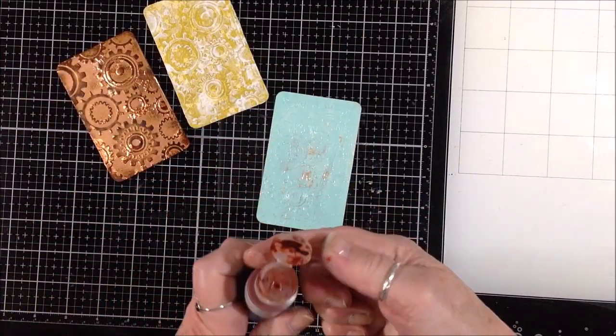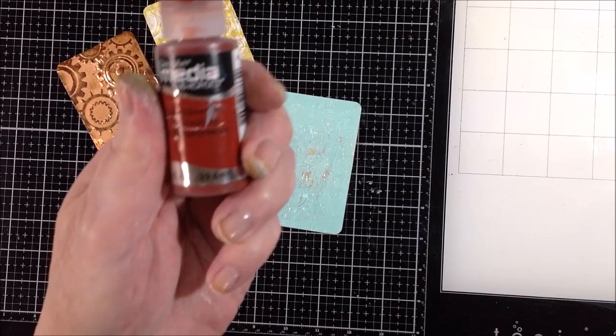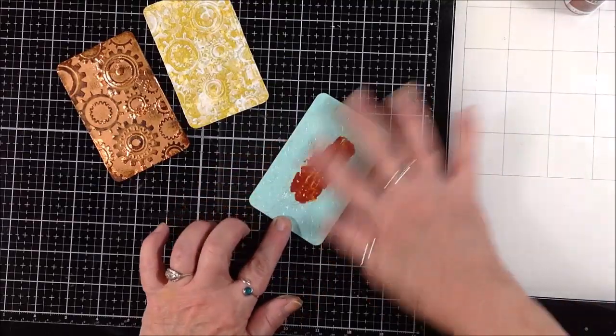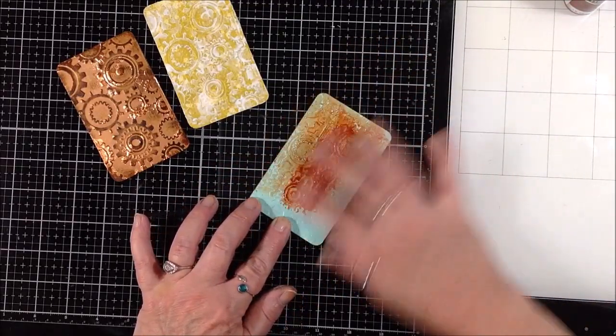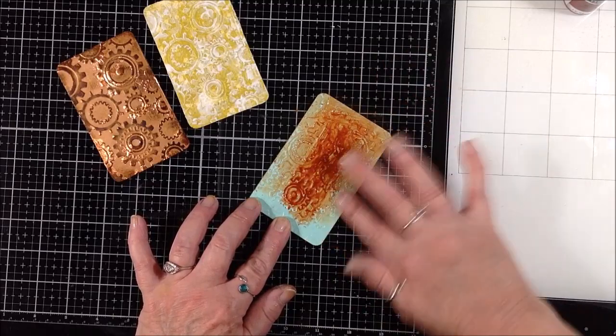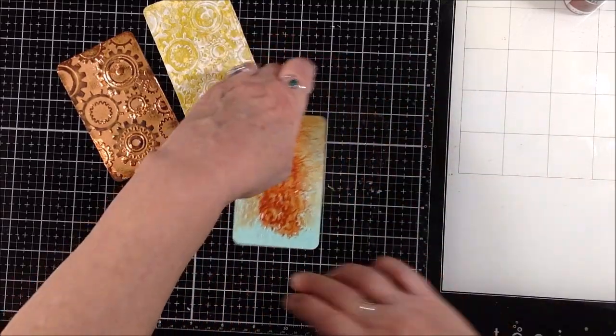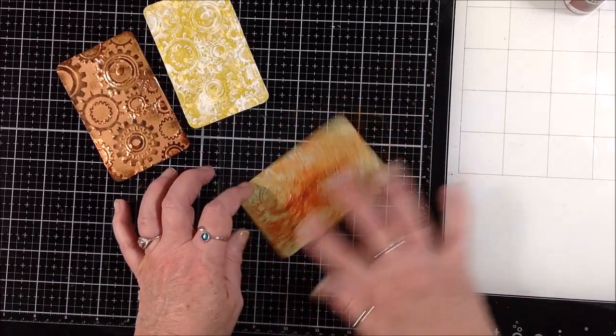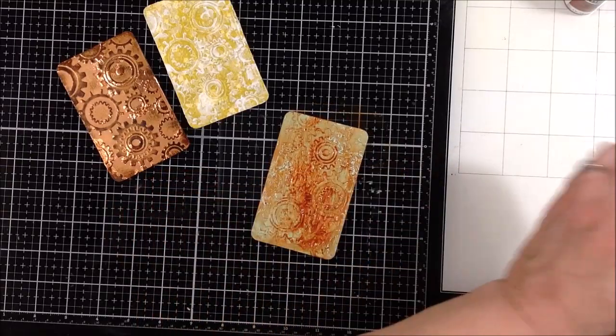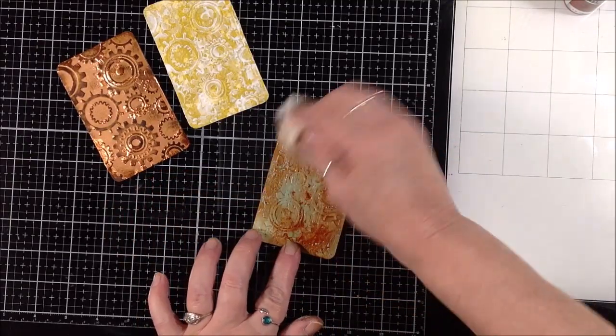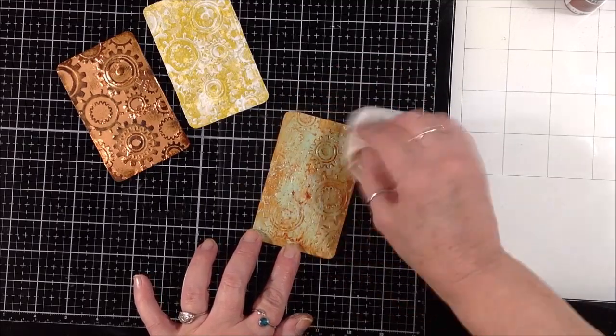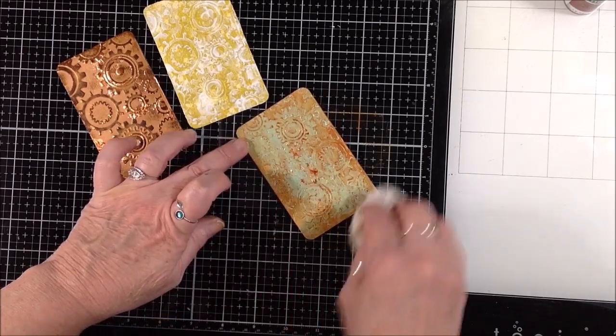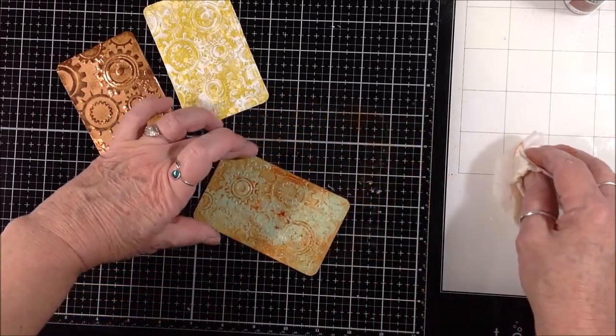Once it was good and dry I grabbed some quinacridone red fluid acrylic. I thought that color would look really pretty on this robin's egg color, so I just smeared it all over and down into the embossing with my finger. You guys know me and my fingers, God's art tools, they're the best. I really like the way it looks. I was glad I did that. Then I just kind of lifted some here and there just to kind of get a vintage, grungy look going, just using a baby wipe.